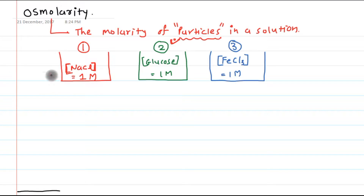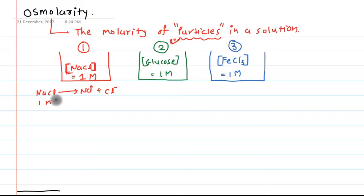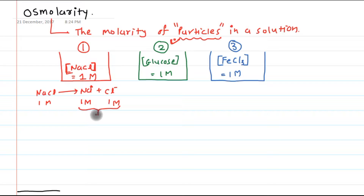Let us see what will happen. In the sodium chloride solution, sodium chloride is going to dissociate into sodium and chloride ions. Each molecule of sodium chloride gives 1 sodium ion and 1 chloride ion. As its concentration is 1 molar, we can get 1 molar sodium and 1 molar chloride. So the number of particles will be 2 molar. We have to count sodium as a particle and chloride as a particle.